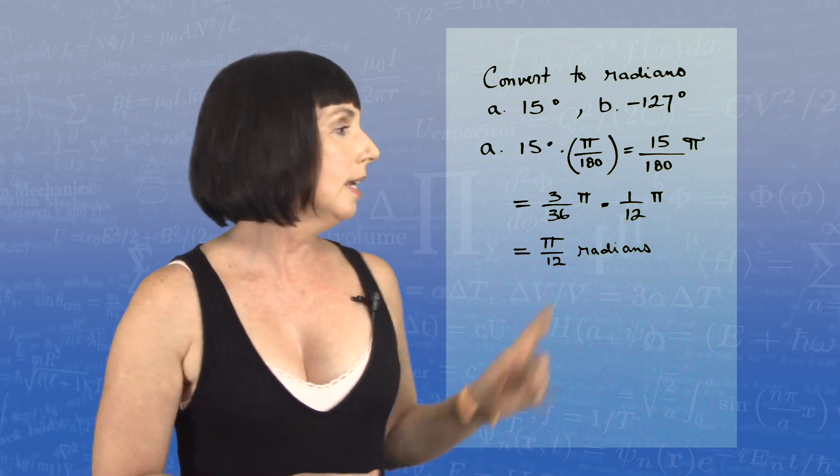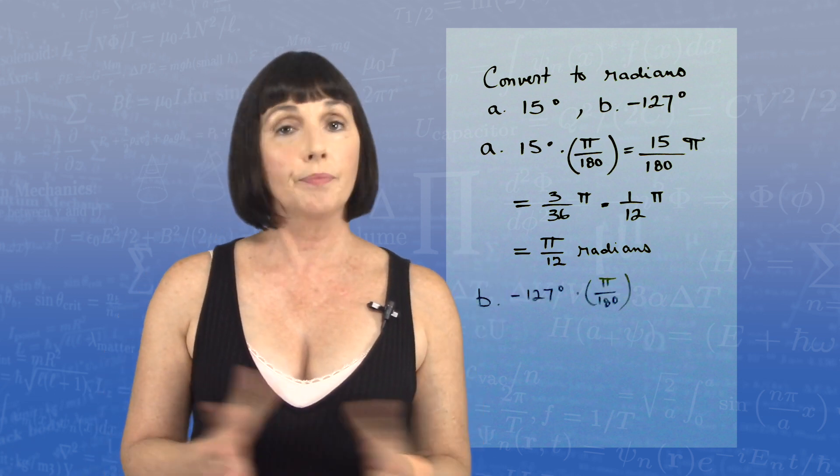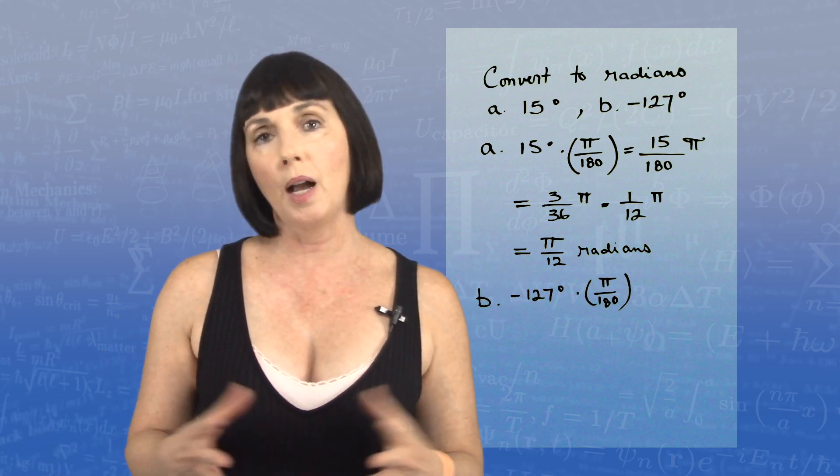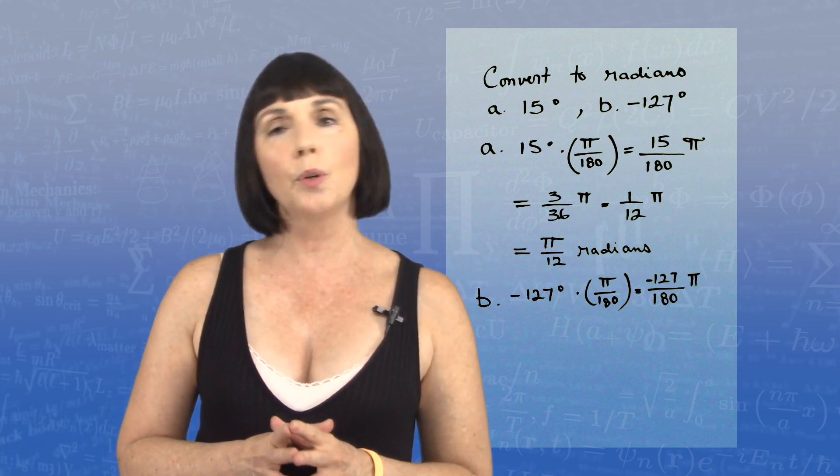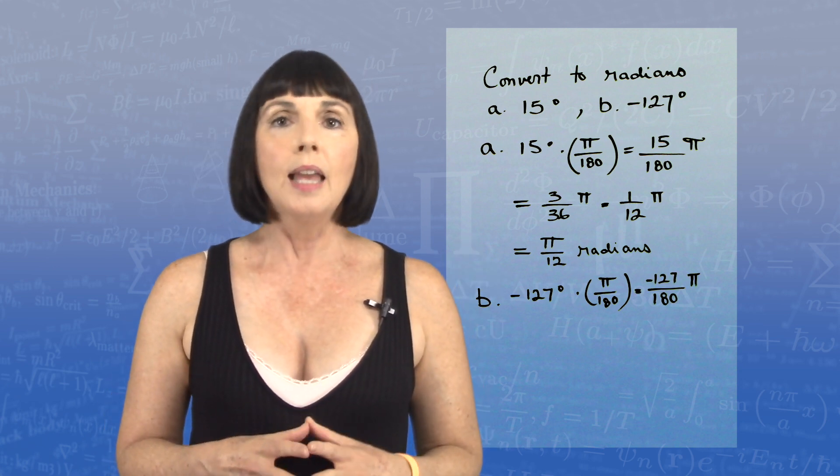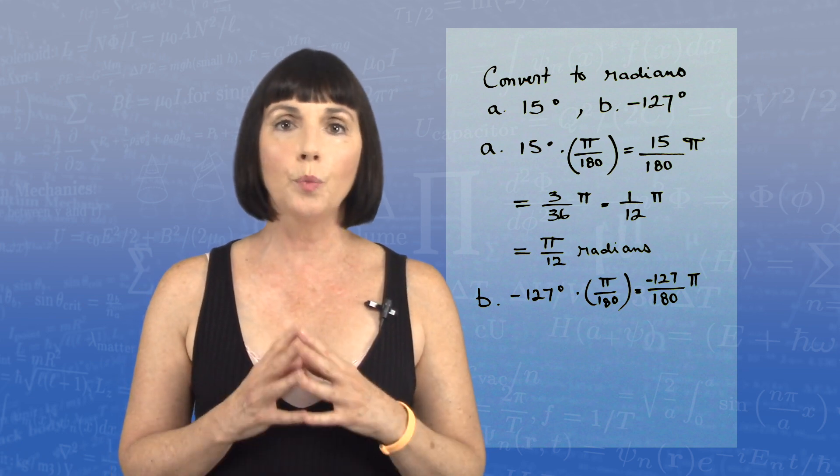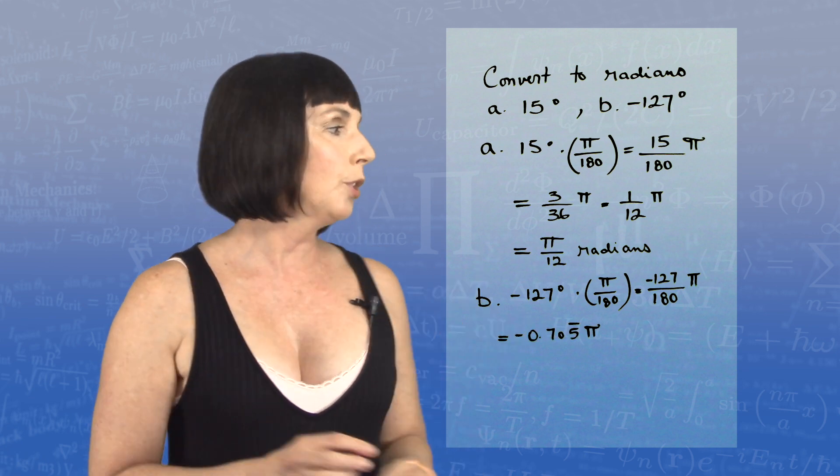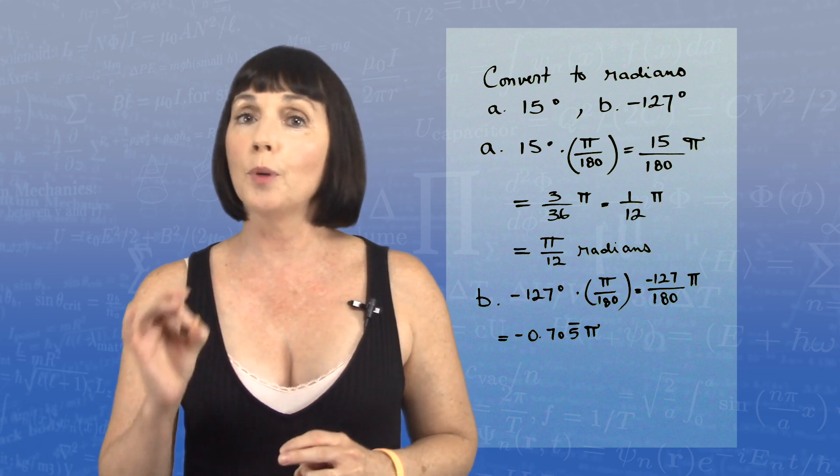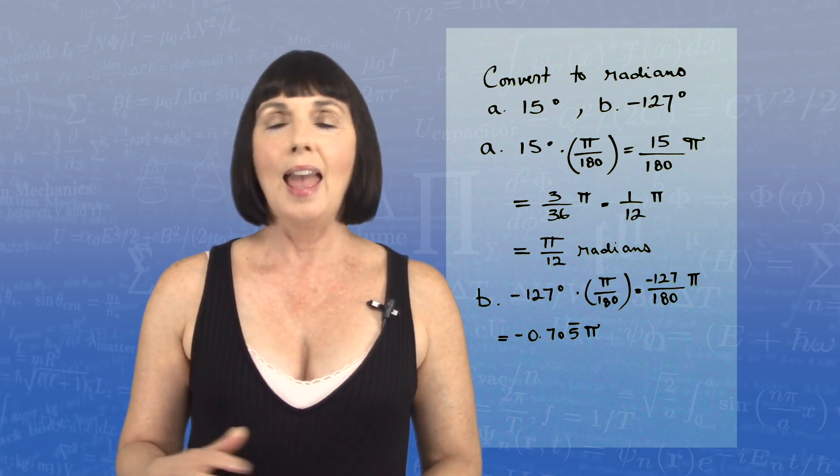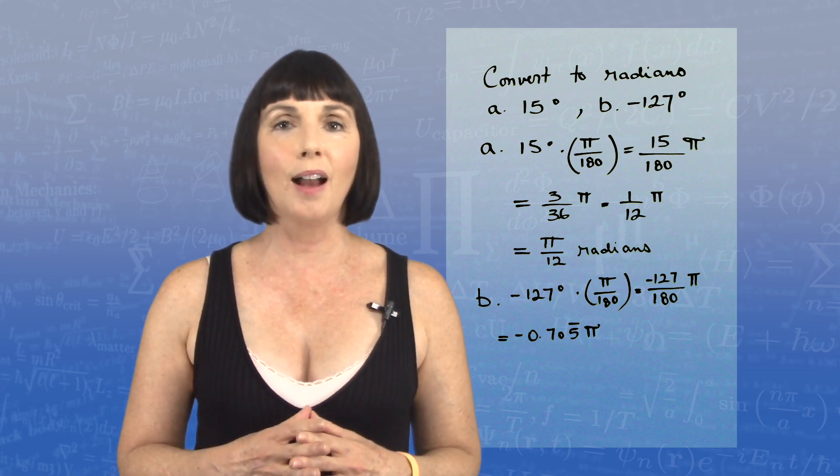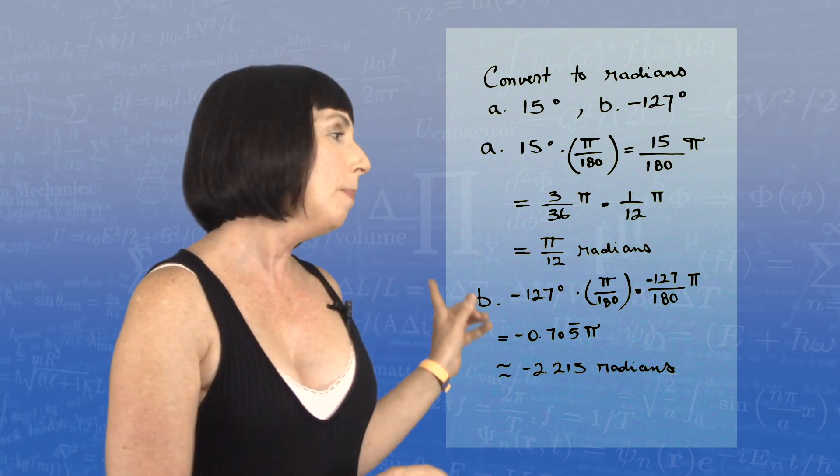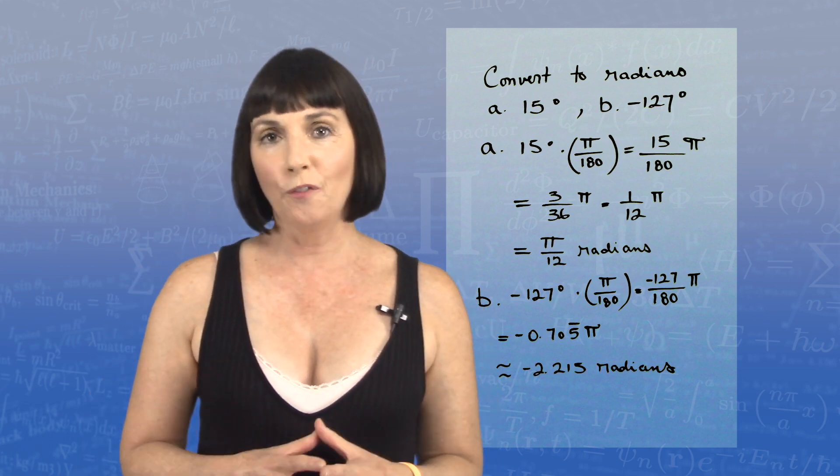What about our next one? Negative 127 degrees. Same thing. You just multiply it by pi over 180. So we have negative 127 over 180 times pi. When we do that division, we get that it's equal to negative 0.705 repeating times pi. And we can approximate that by rounding off and approximating pi. And we come up with about negative 2.215 radians.